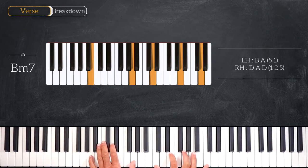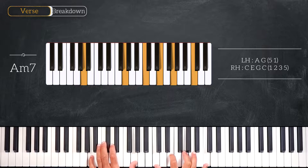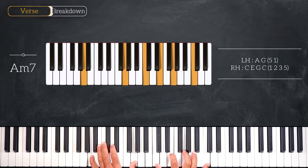Then we'll play this A minor 7 chord. Playing A, G on the left and C, E, G, C on the right hand.